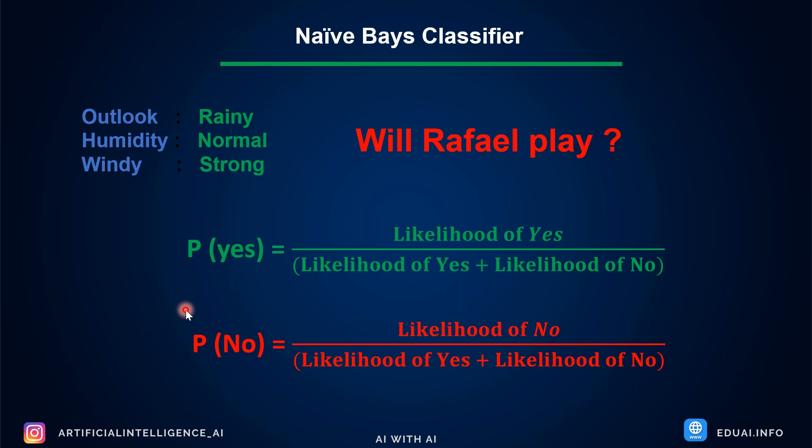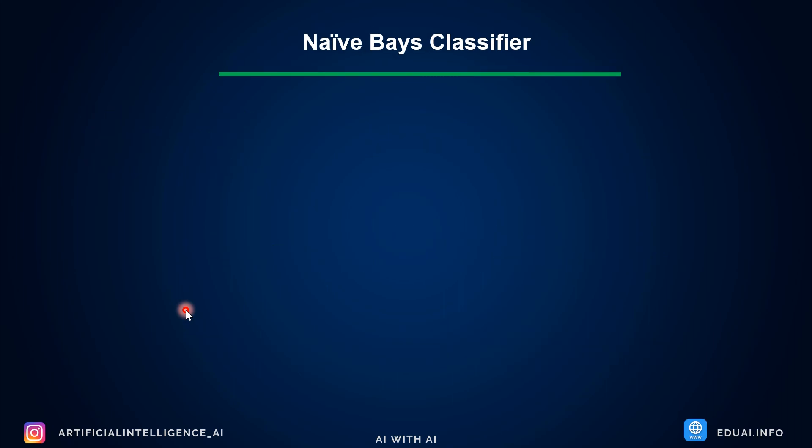I have already created probability tables you can refer to by pausing the video. Calculate the values and put them in the comments — because if you calculate the values yourself, you will never forget the Naive Bayes classifier. It's just a game of probability, a mathematical magic happening behind this classifier. This is how machine learning actually predicts future values and output.